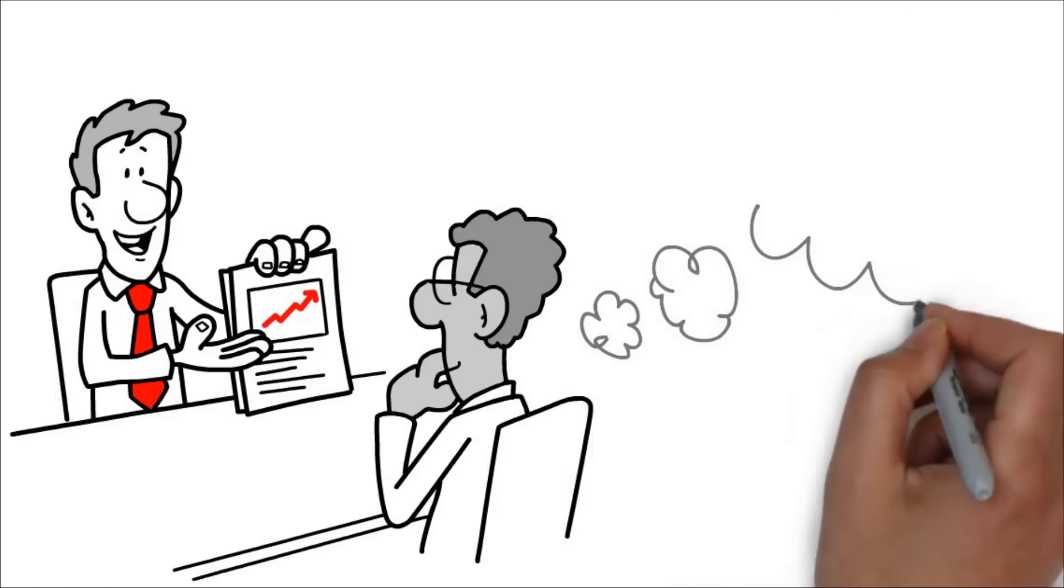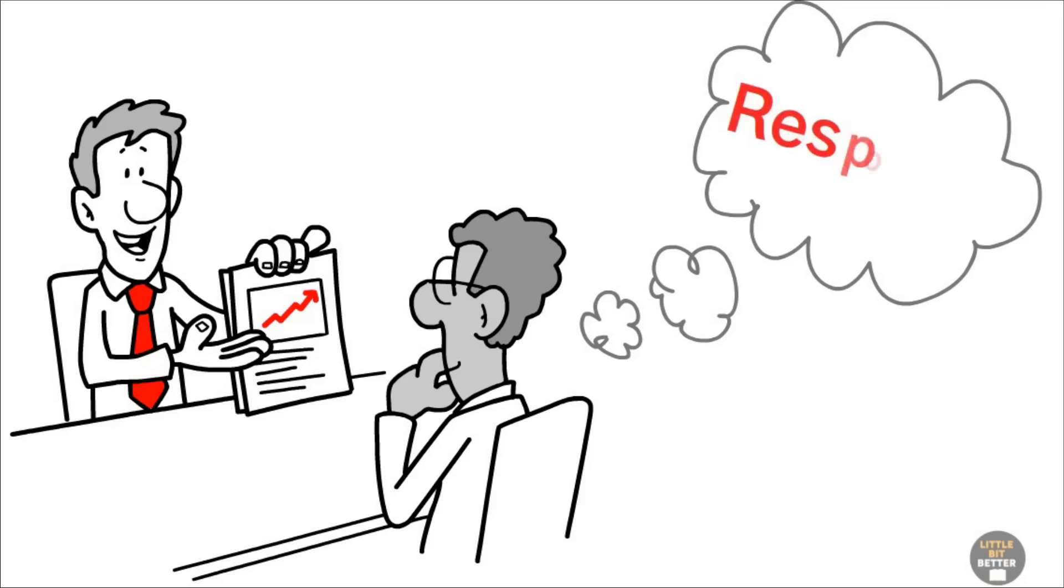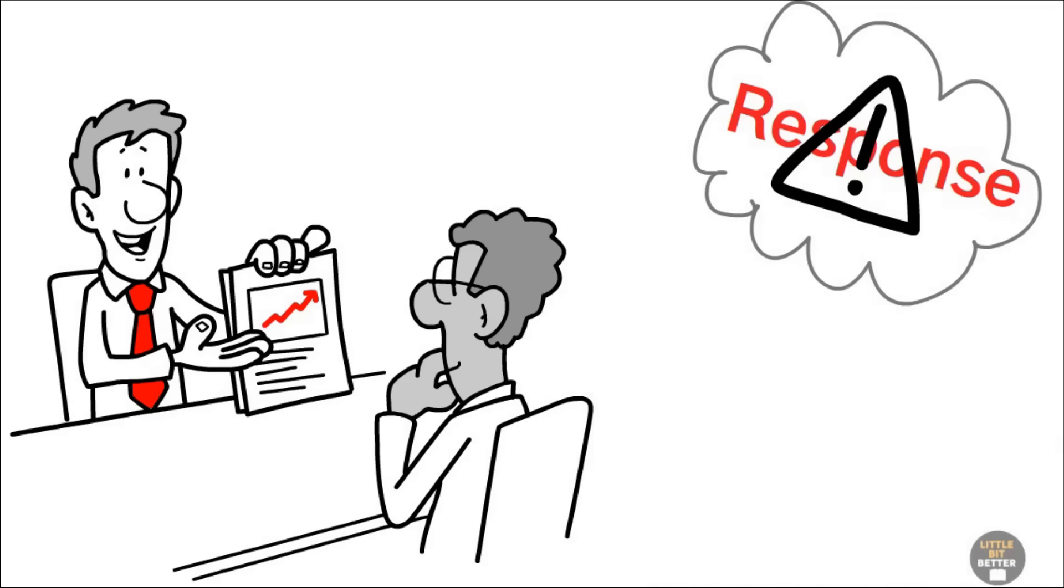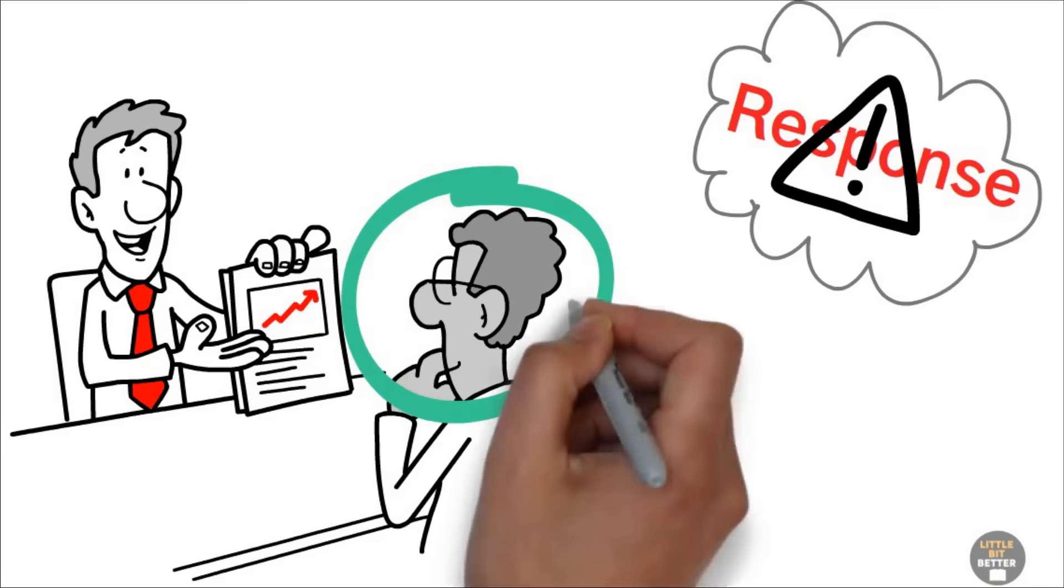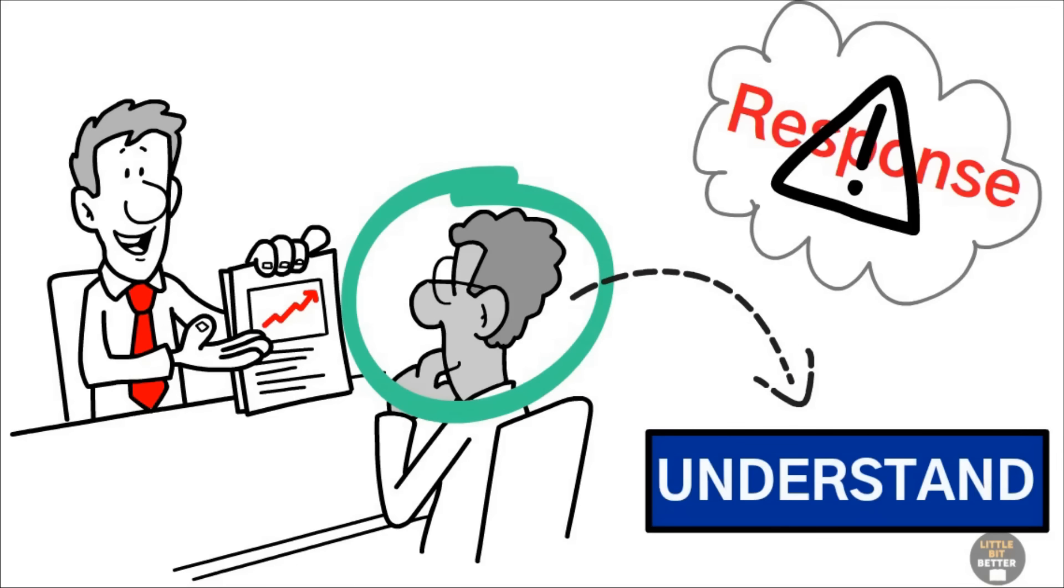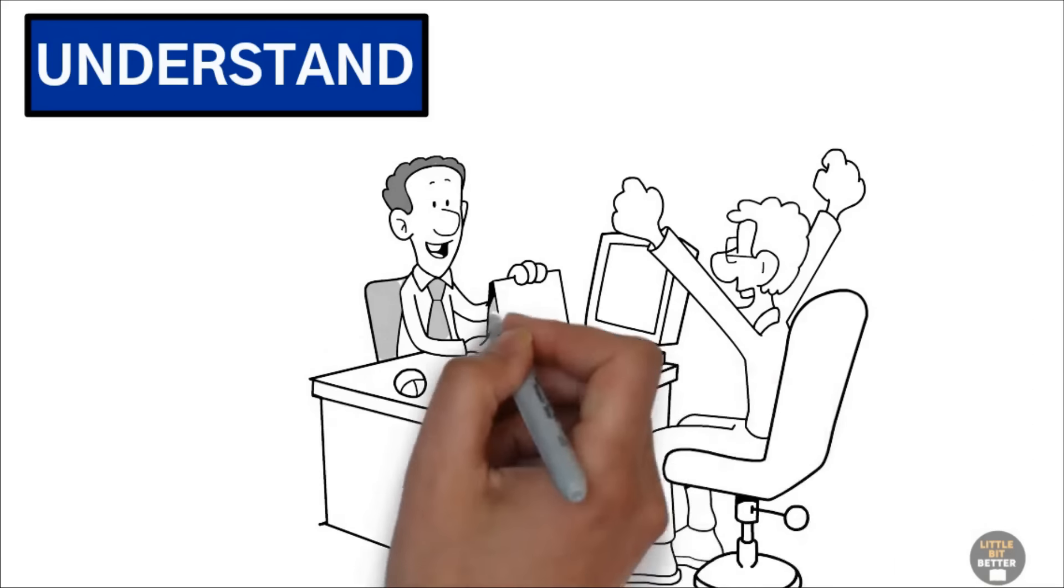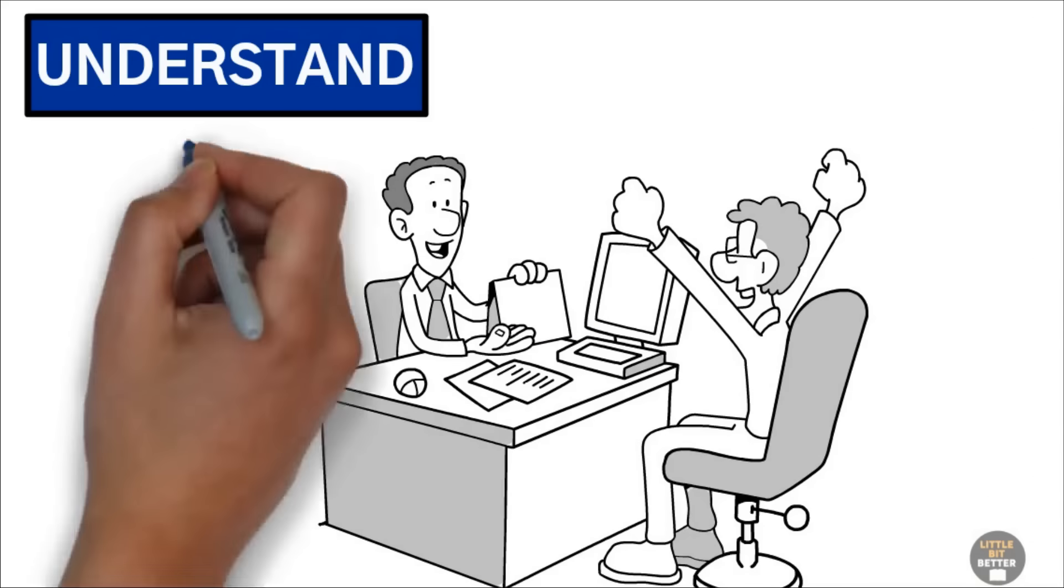While the other person talks, you're already thinking about the response that you will give once they stop talking. This is a huge problem. So how do you communicate effectively? First, listen to understand, not to respond. Once you understand, simply tell them what you understood. Sum it up and give it back to them in your own words.